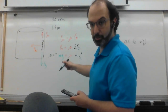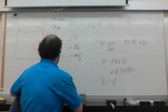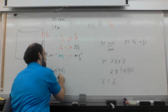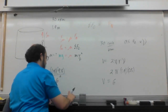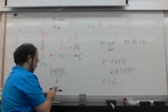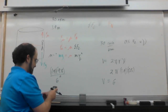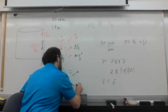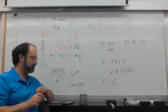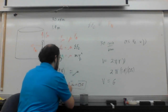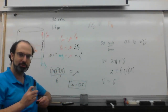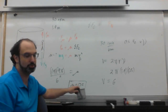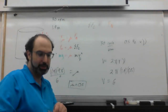Plugging everything in with masses cancelled: v²/r × g gives us 9.8 × 1.9 divided by 1.9 — wait, divided by 6 squared — and we get a coefficient of friction of 0.5. So provided you have at least a 0.5 coefficient of friction, you will stick to the walls of the Gravitron.